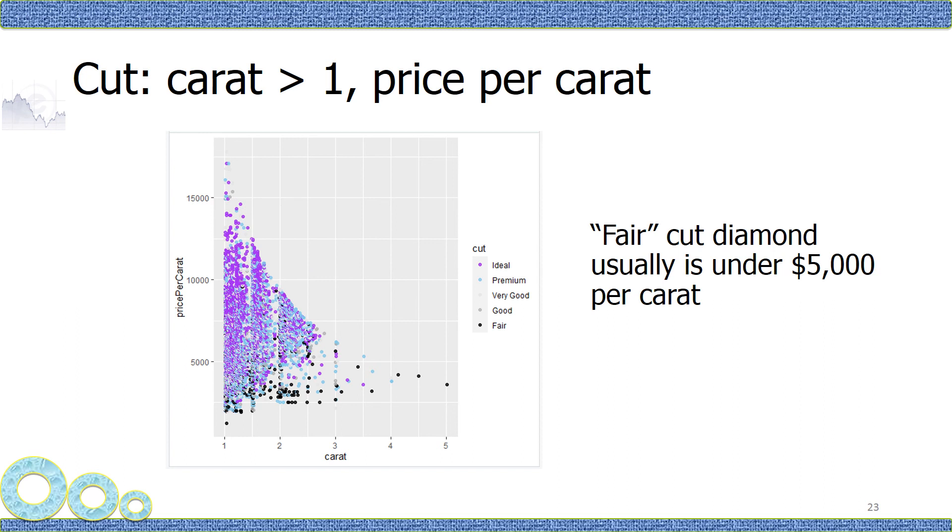Now, if I plot the carat versus price per carat, the pattern is more clear. And you can see fair cut diamond usually is under $5,000 per carat.